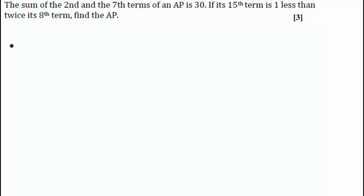So here is another question on AP. The question reads: The sum of the second and seventh term of an AP is 30. If the 15th term is one less than twice its eighth term, find the AP.